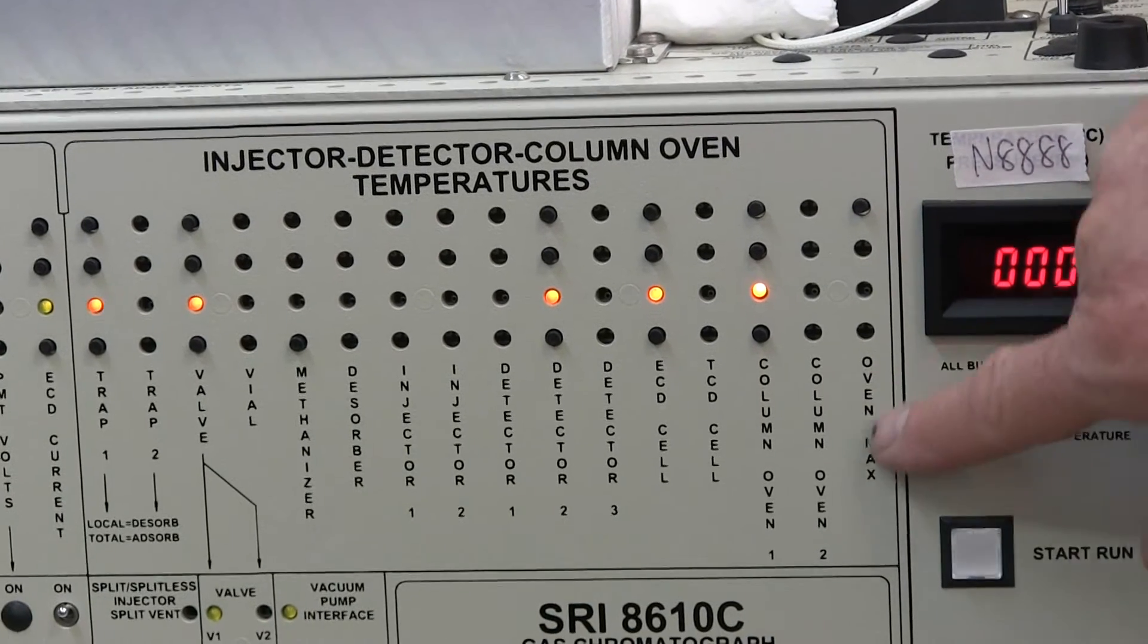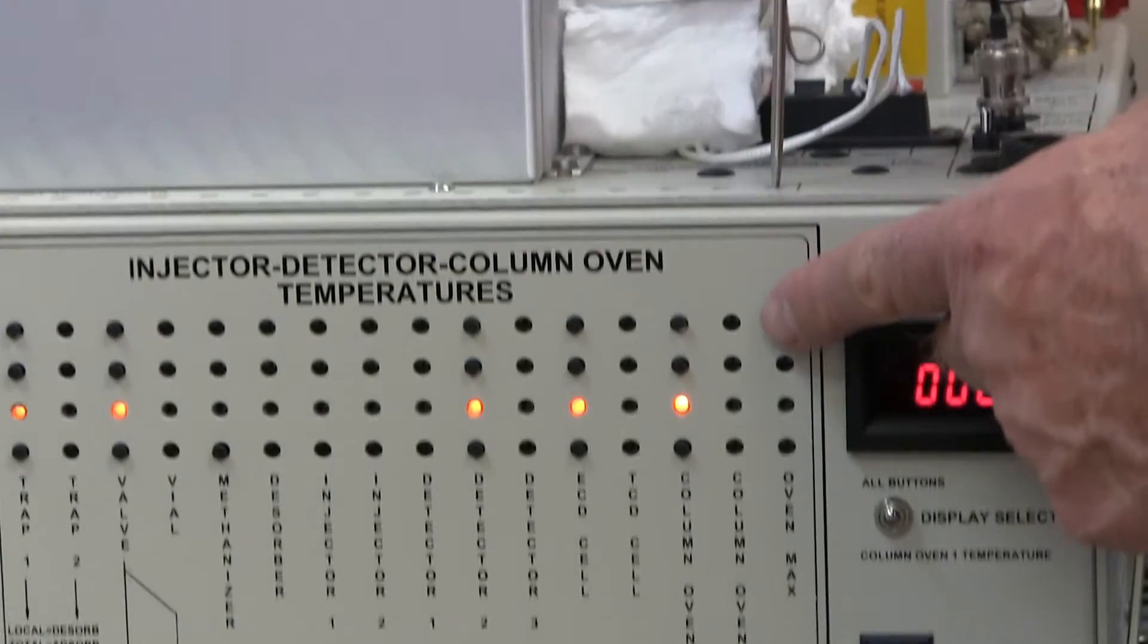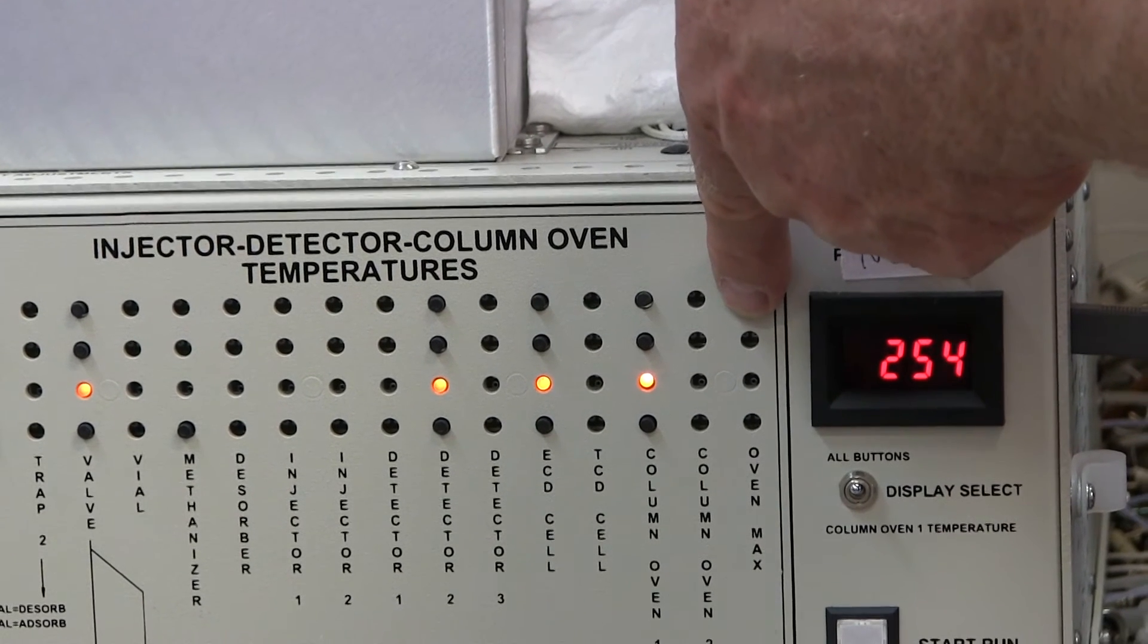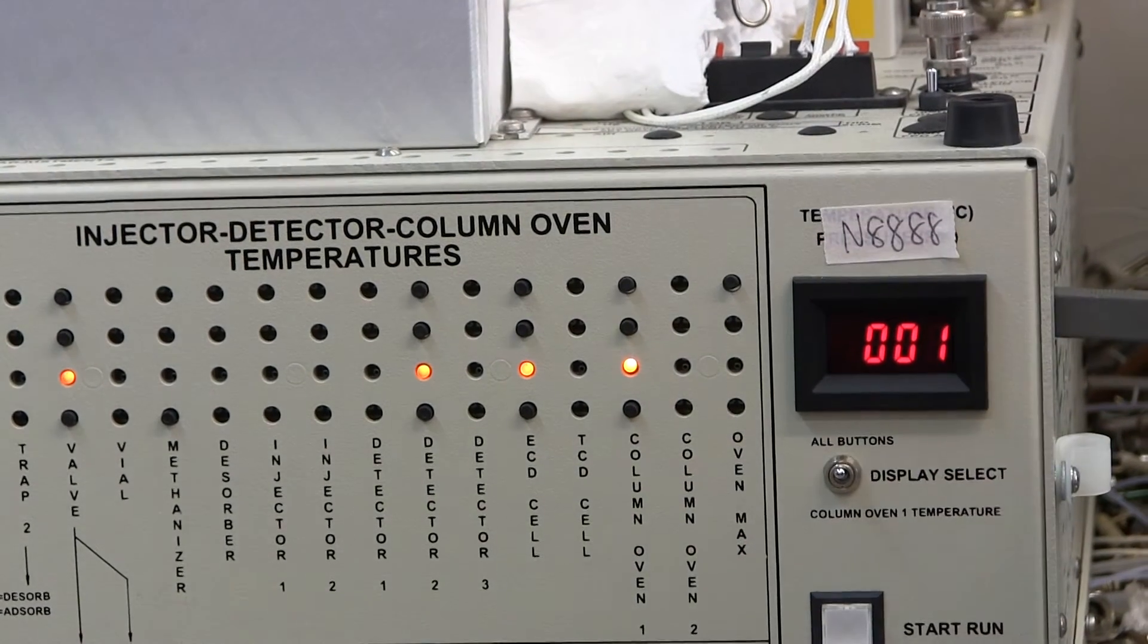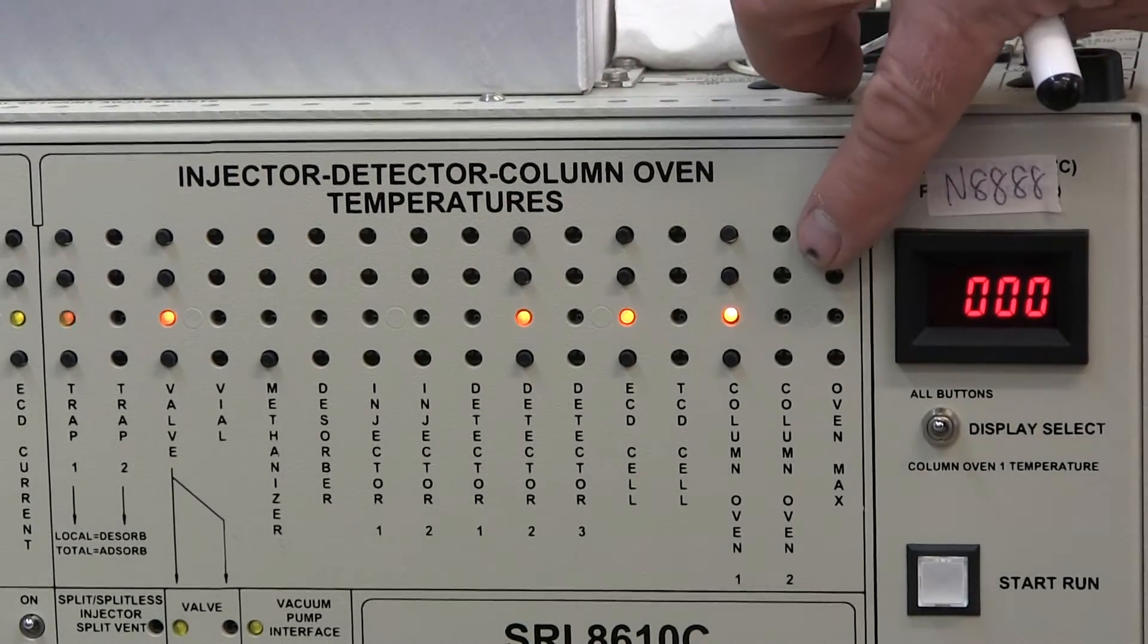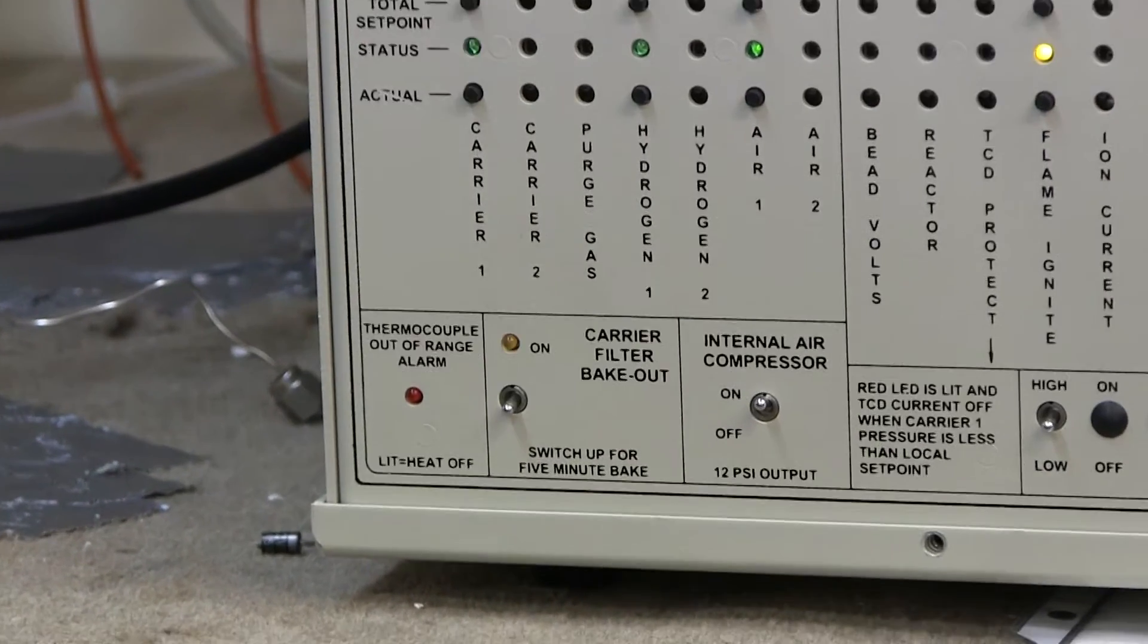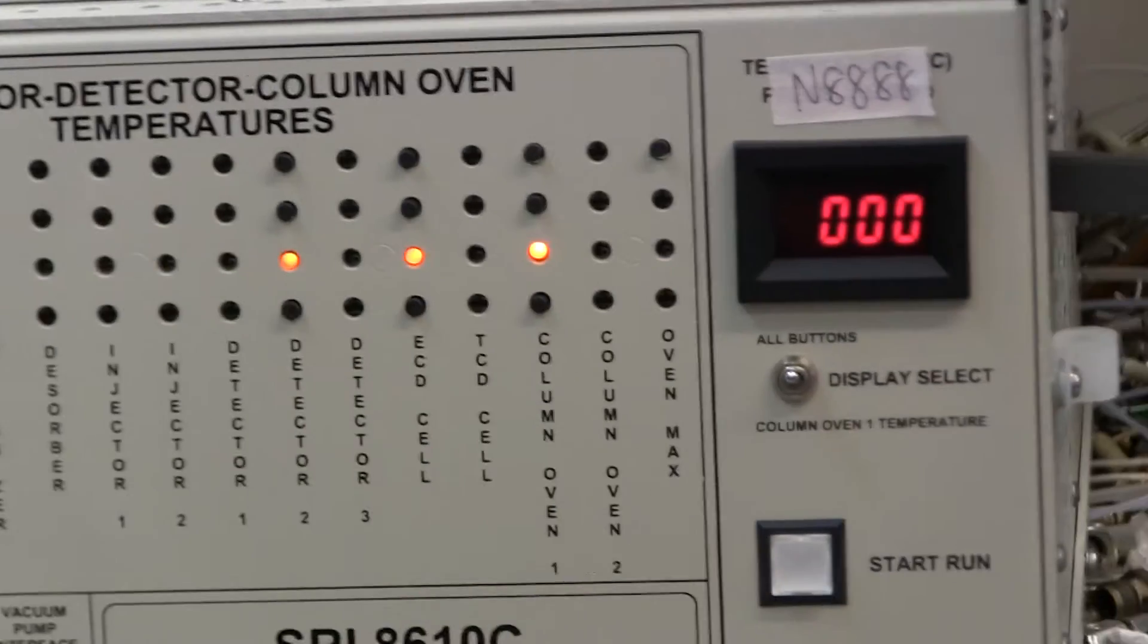This last button here labeled oven max is a safety feature. If you set this temperature with your screwdriver, and you have a column in your column oven that has a maximum safe temperature of 250 for instance, then you might set the oven max at 255. That way, if you make a mistake or somebody new comes along and raises the temperature beyond the safe limit, then there will be an alarm that sounds. That's this red light here in the bottom left, called the thermocouple out of range alarm. If you try to heat the oven above the oven max, then this red light comes on and it turns off all the heaters.